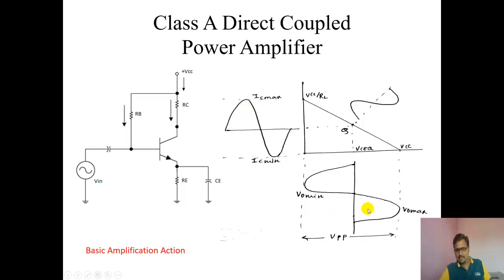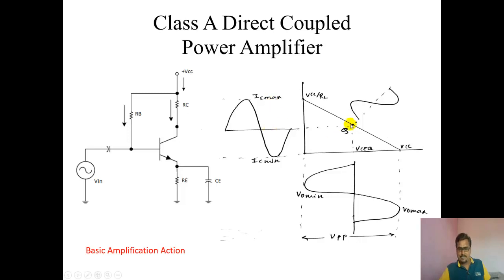The peak-to-peak value of the current waveform will be twice ICQ. For voltage, the peak-to-peak value is 0 to VCC. Since equal swing means the upper part will be exactly ICQ, we have ICQ plus ICQ — so peak-to-peak current is twice ICQ. And VO max minus VO min equals the peak-to-peak voltage, which equals VCC.